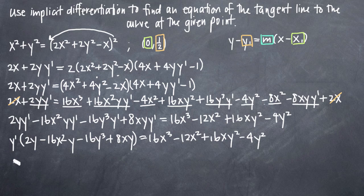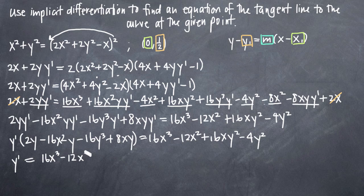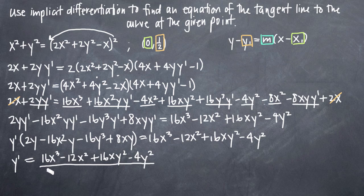Now I divide both sides by that whole quantity (2y minus 16x²·y minus 16y³ plus 8xy) to get y prime on its own. So y prime equals 16x³ minus 12x² plus 16xy² minus 4y², all divided by 2y minus 16x²·y minus 16y³ plus 8xy.